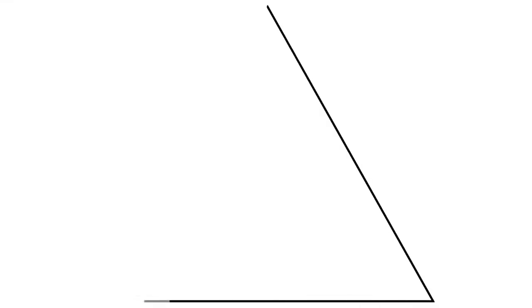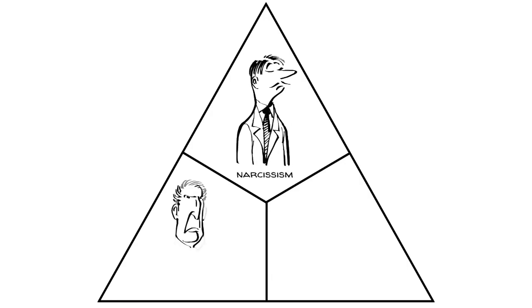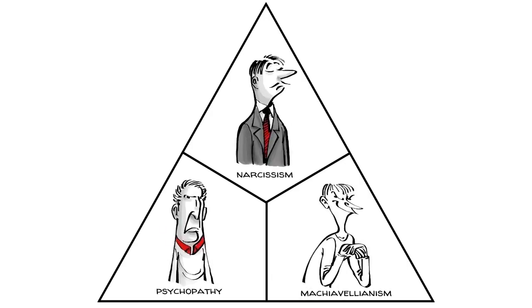In psychology, the dark triad represents three personality traits: narcissism, psychopathy and Machiavellianism.